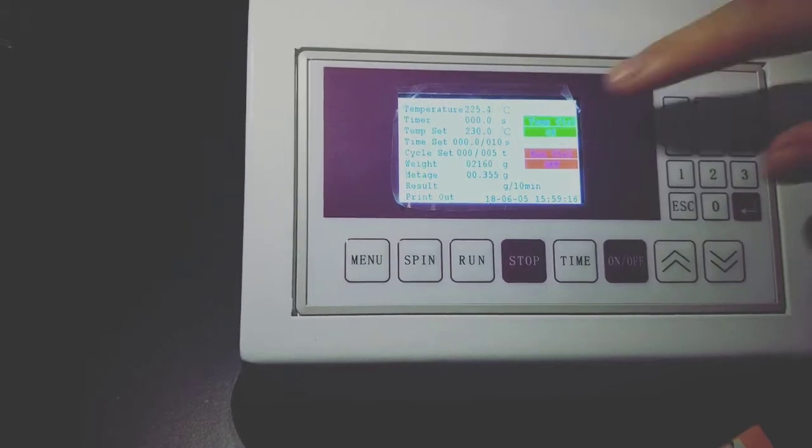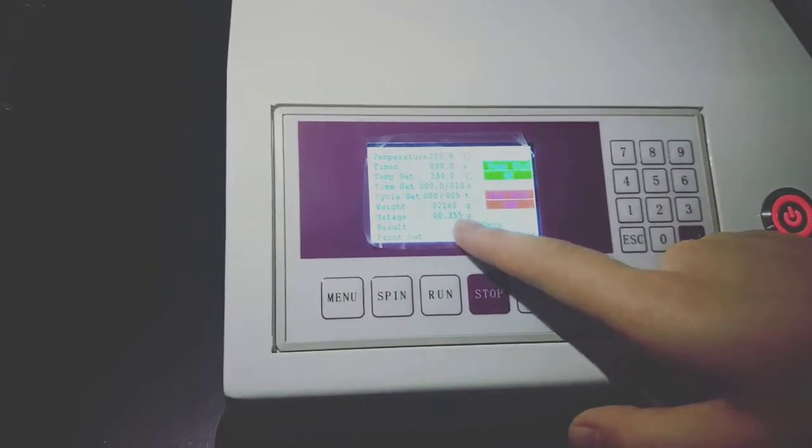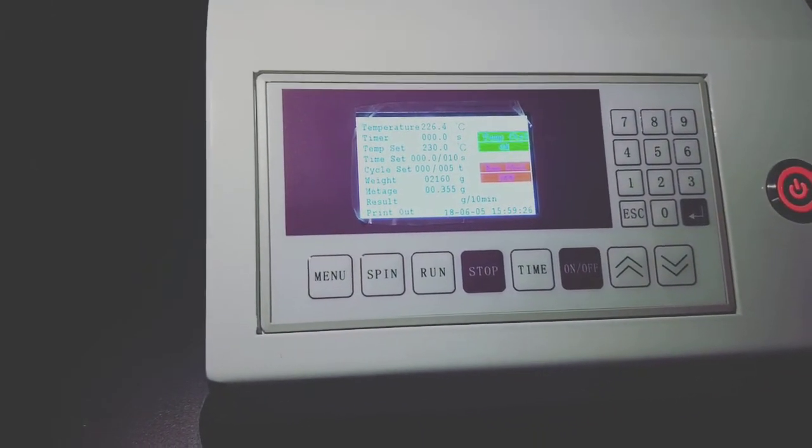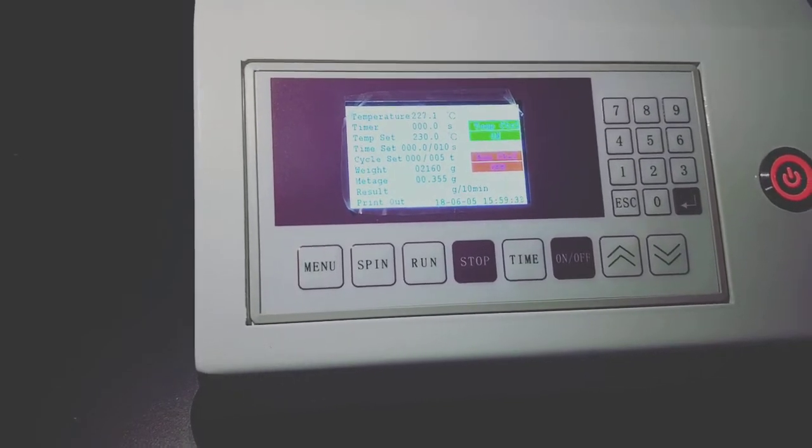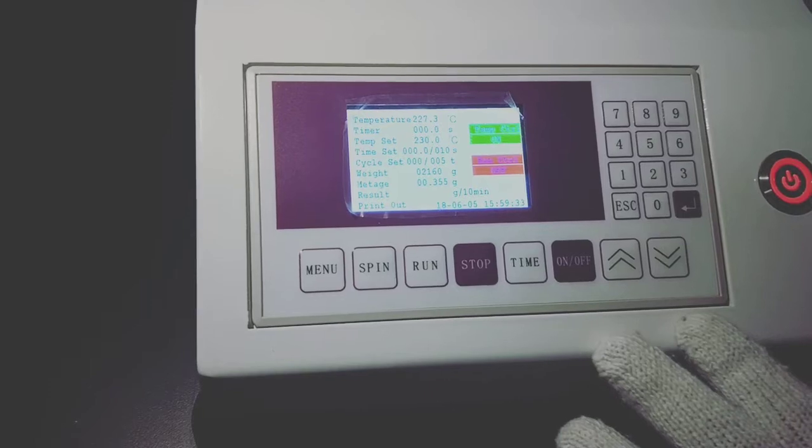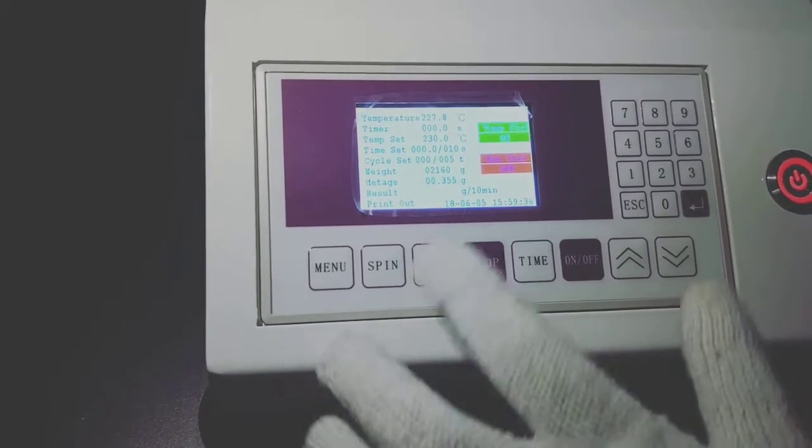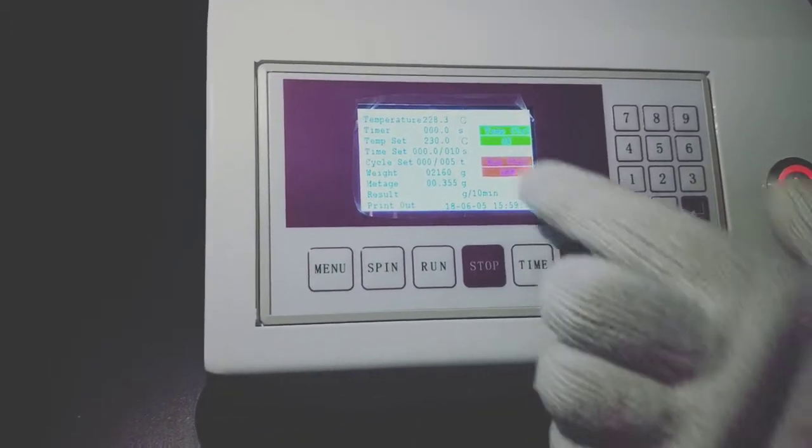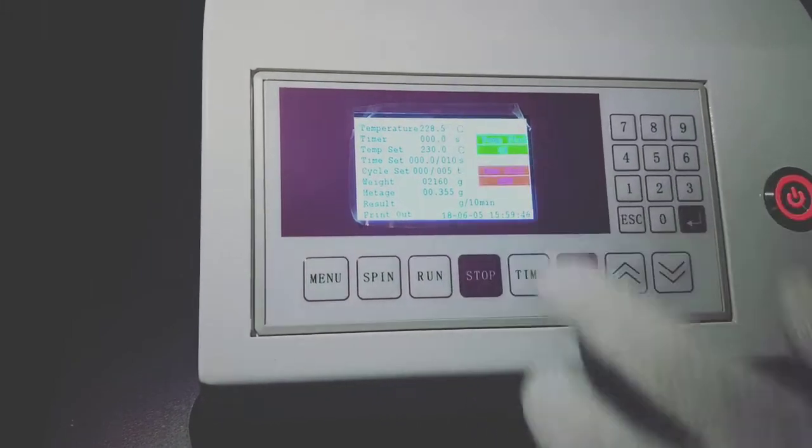We input the weight here and add corresponding weights on the machine. And this metric is the extrusion sample weight. For example, we cut five pieces of sample. Then we measure the five pieces weight. And the calculator gives the average weight of each piece. And then input the average value here. We have set the temperature to 230, and now it's almost reaching the temperature. Now we will introduce the components.